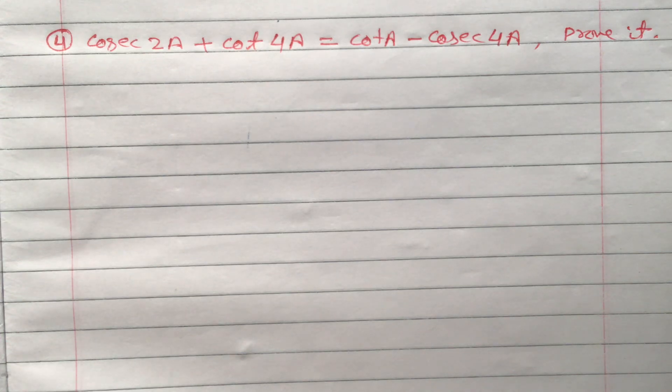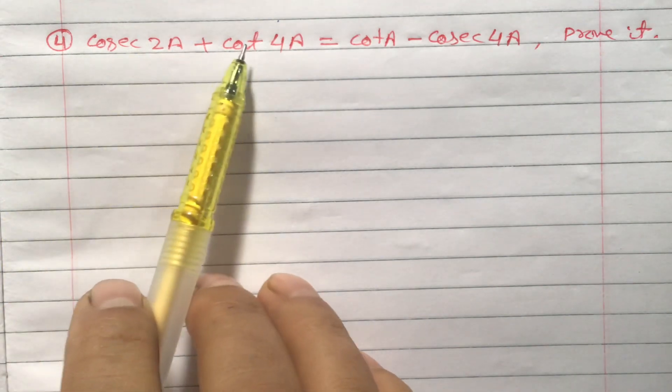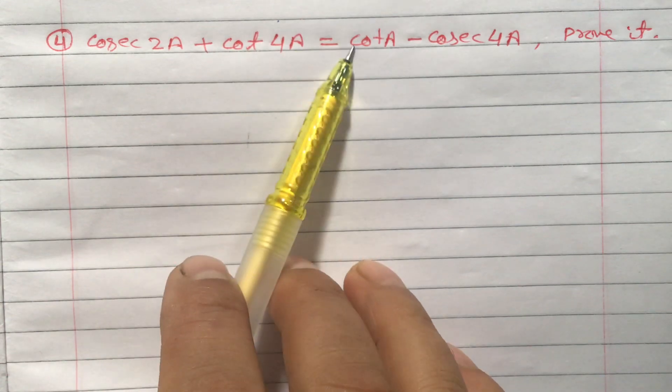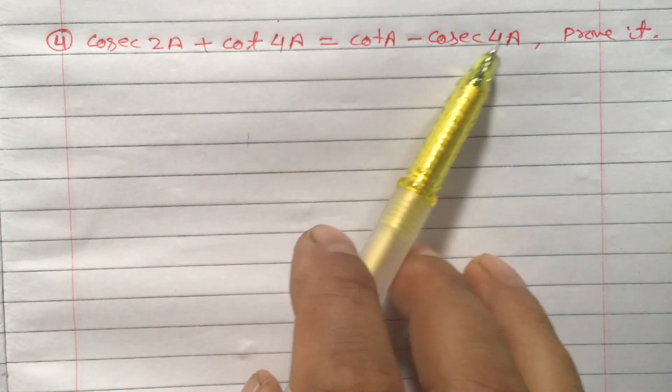Dear students, I am going to teach the fourth question of trigonometry multiple angle of class train. So here the question is like this: cos 2a plus cot 4a equals to cot a minus cos 4a.